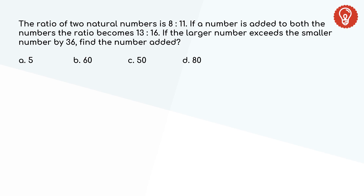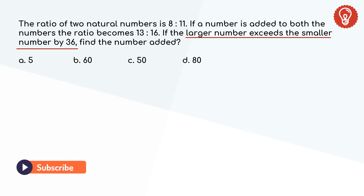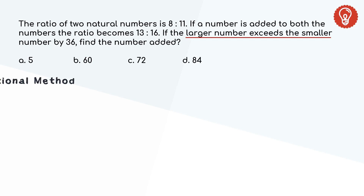It is given that there are two numbers in the ratio 8 to 11. The key point in this question is that the larger number exceeds the smaller number by 36, which means the difference between the two numbers is 36. Let us now solve this question using the traditional method, that is, using equations.